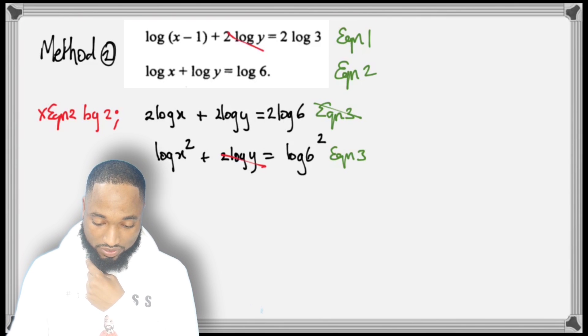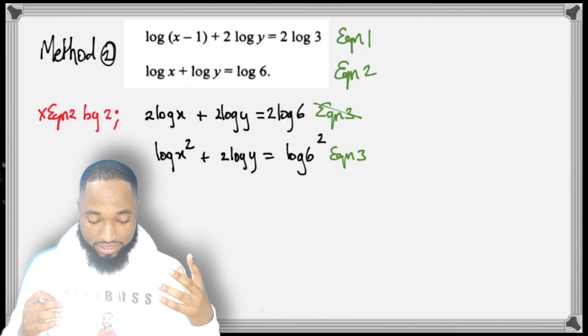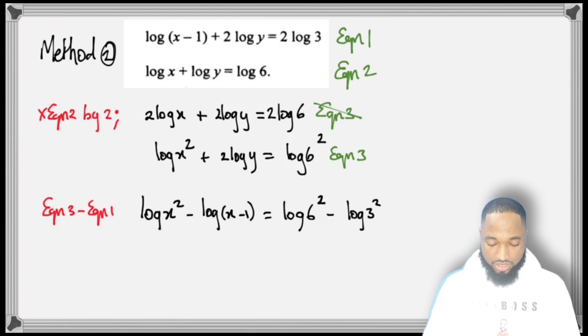How do you eliminate? You remember simultaneous equations elimination method? What you do is you subtract equations. So Equation 3 take away Equation 1 gives us this. In other words, log of x squared take away this—this cancels—and this take away that gives me a nice little log equation here.